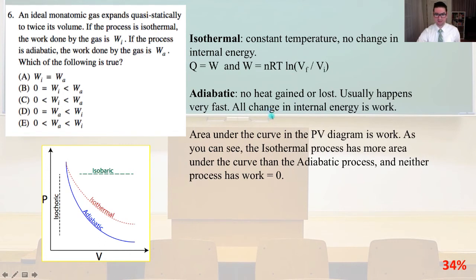Adiabatic means no heat gained or lost. It usually happens very fast. All change in internal energy is work. The area under the curve in the PV diagram is work. As you can see, the isothermal process has more area under the curve than the adiabatic process, and neither process has zero work. I've provided a diagram for you of a classic PV diagram, and that is clearly answer E.